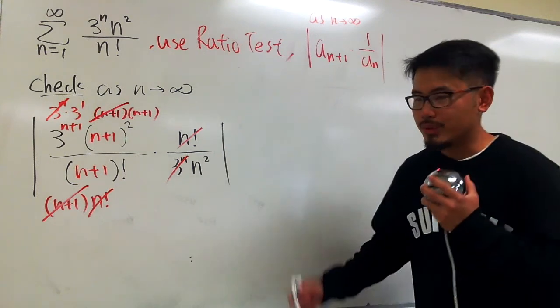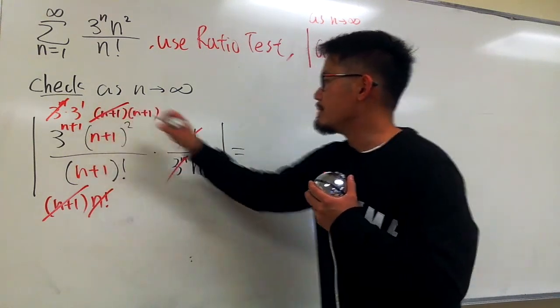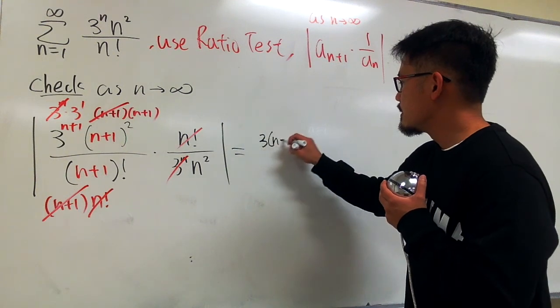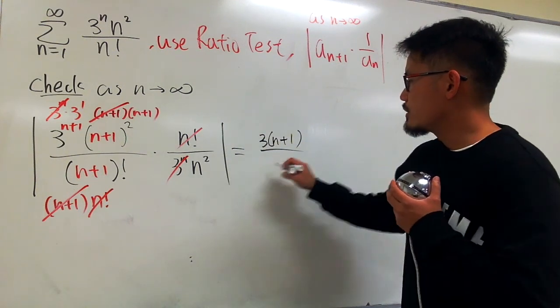At the end, what do we have? This is the same as 3 times (n+1) over n squared.